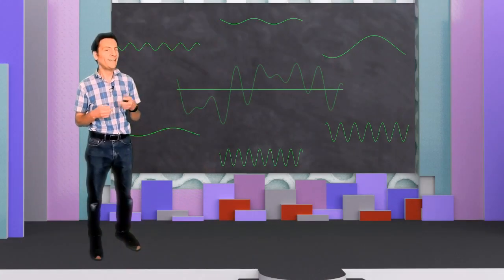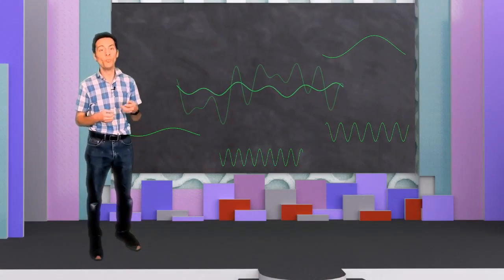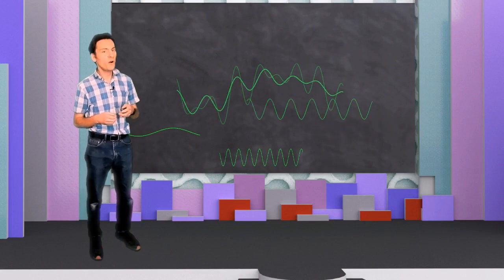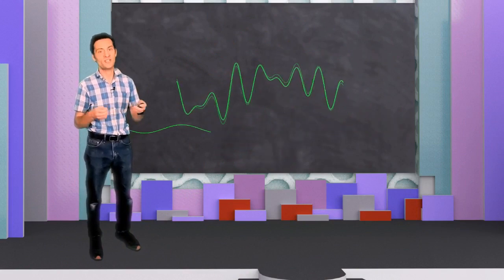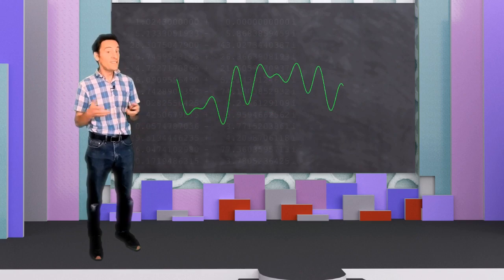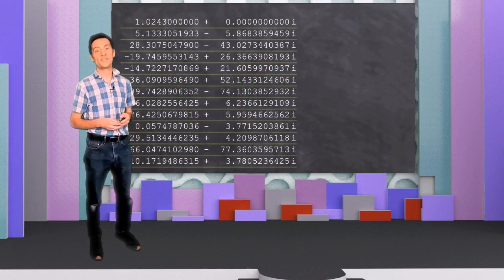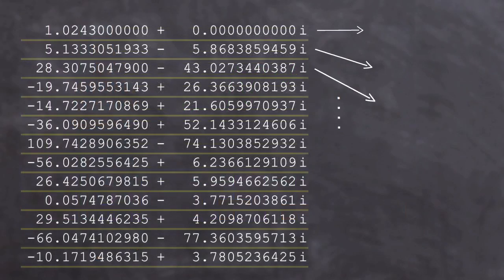However, unlike my key analogy, your signal will most likely be built out of more than one sinusoid. So more than one wave will fit into your signal. This is why you get a list of results. Each line in that list represents a different sinusoid.